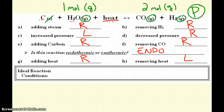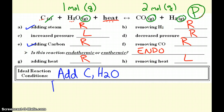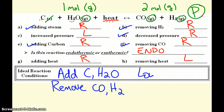So again, ideally for this reaction, I want to add my reactants — this time it's carbon and steam. Those both say going right. And I need to remove my products — carbon monoxide and the hydrogen. And then check your temperature and pressure. This time, to go right, I want a lower pressure situation, and I want to add heat, so I want higher temperature.